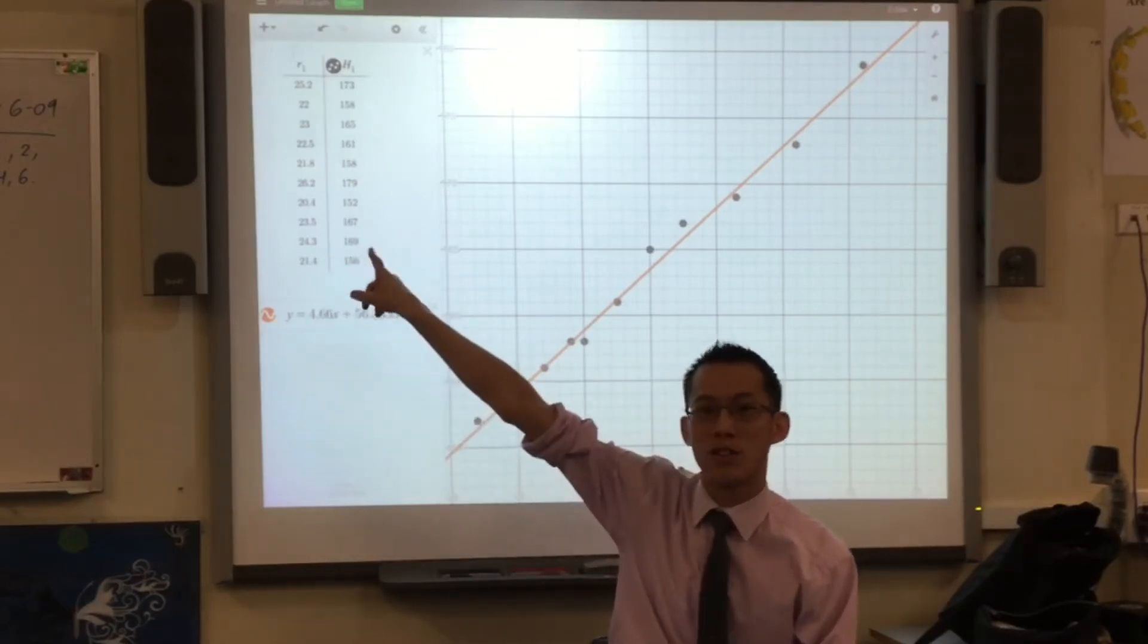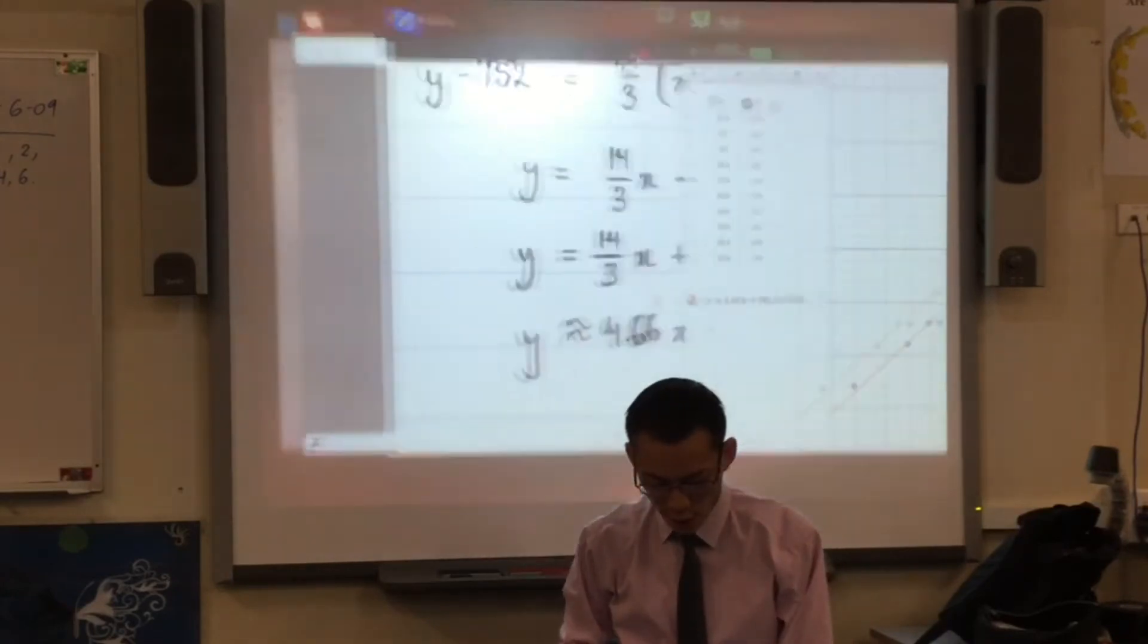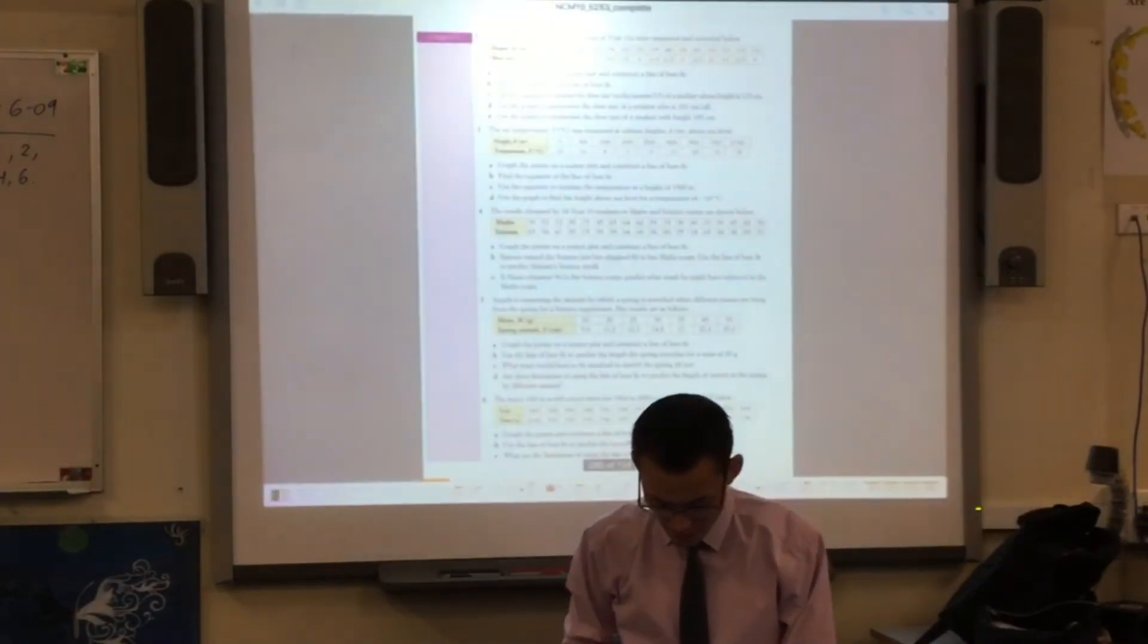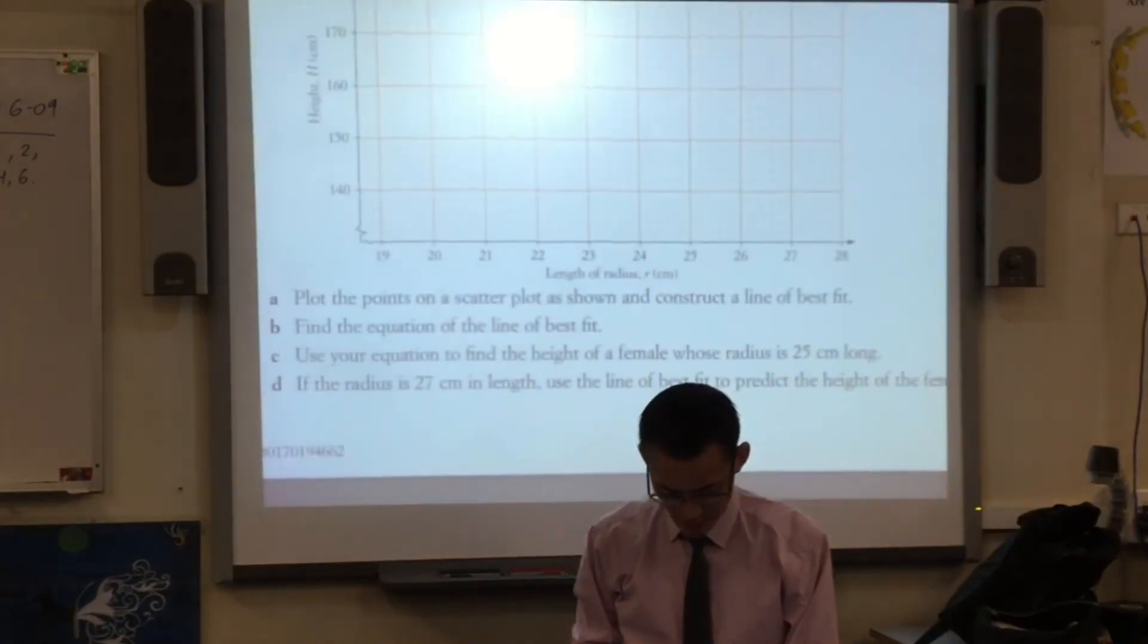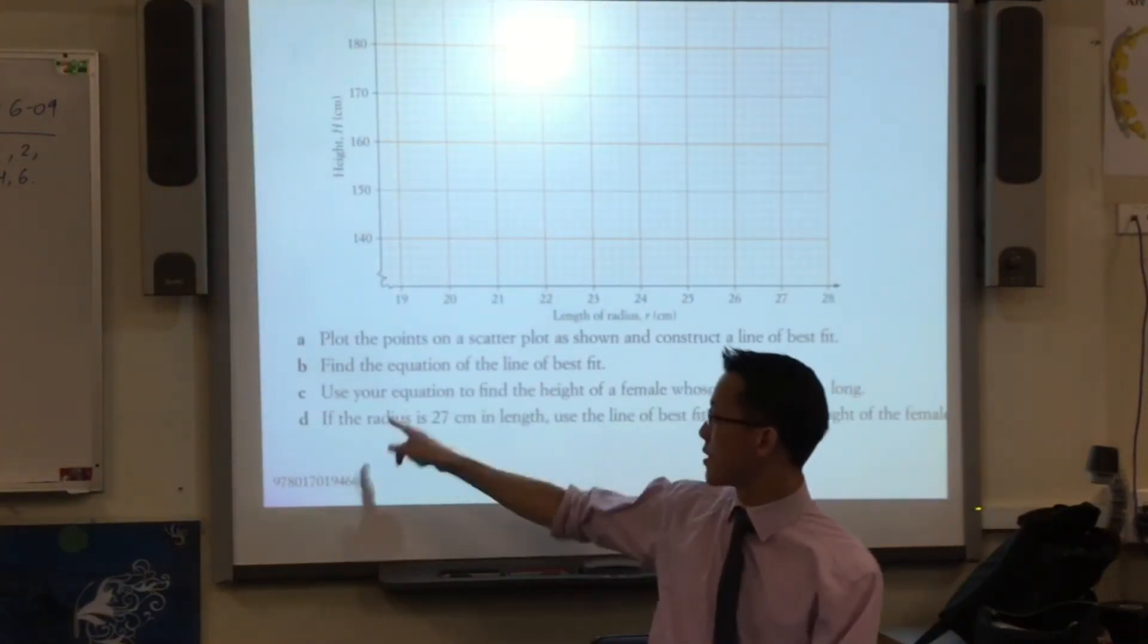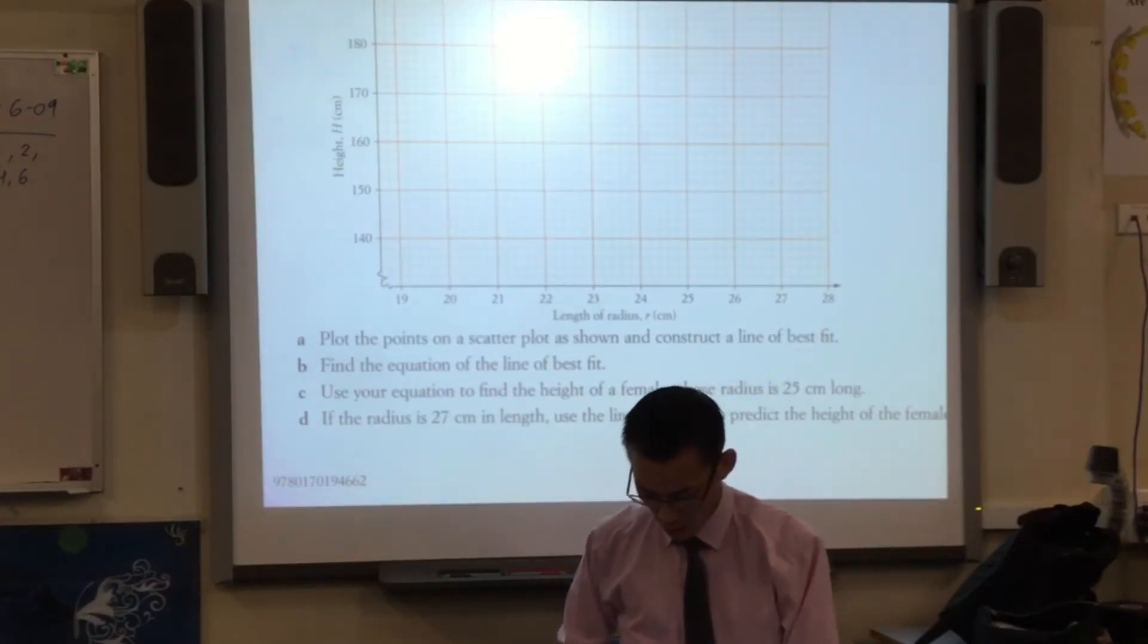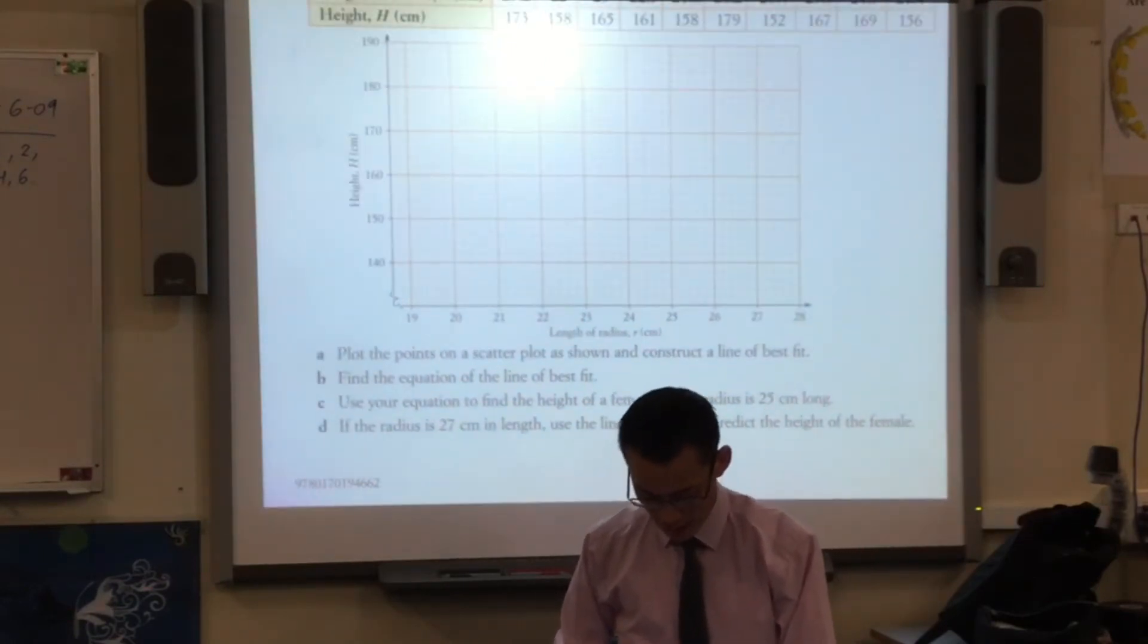So, you've got an equation now. Let me finish. I've asked you to do questions 1, 2, 4, and 6. We're like 90% through question 1. So, let's finish it together. The rest of question 1 says, you've done part A and B, so we're going to do part C. Use your equation to find the height of a female whose radius is 25 centimeters long.